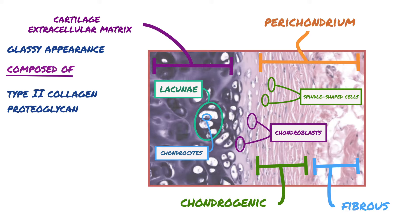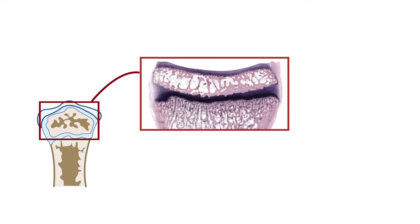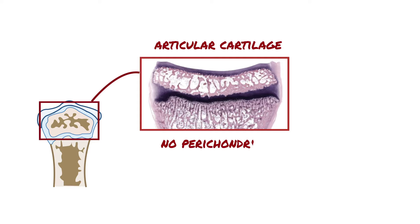Hyaline cartilage that covers the articular surfaces of movable joints is termed articular cartilage. In general, the structure of articular cartilage is similar to that of hyaline cartilage. However, the free or articular surface has no perichondrium.